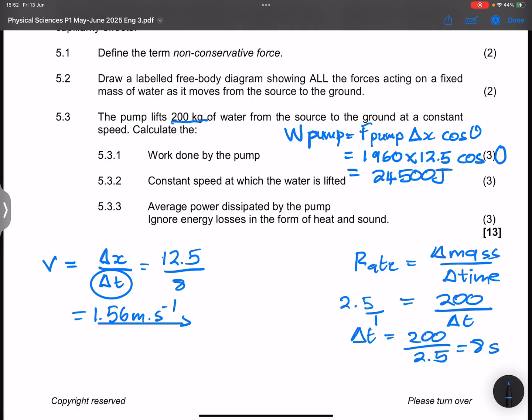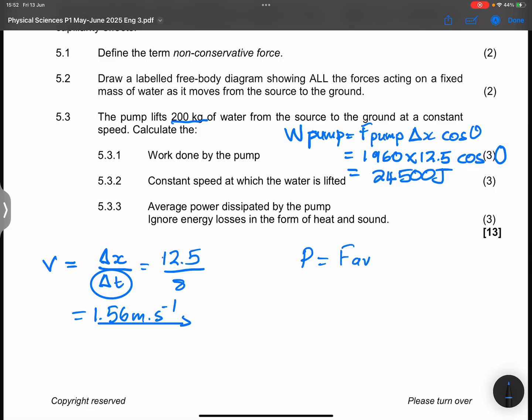And then finally, they wanted us to determine the power that is dissipated by the pump. So we know that every time we get power, that's going to be the force of the pump in this case, multiplied by the average velocity. We found that average velocity there. So that's going to be the force of the pump. We found it to be 1960, multiplied by that average velocity, which is 1.56.